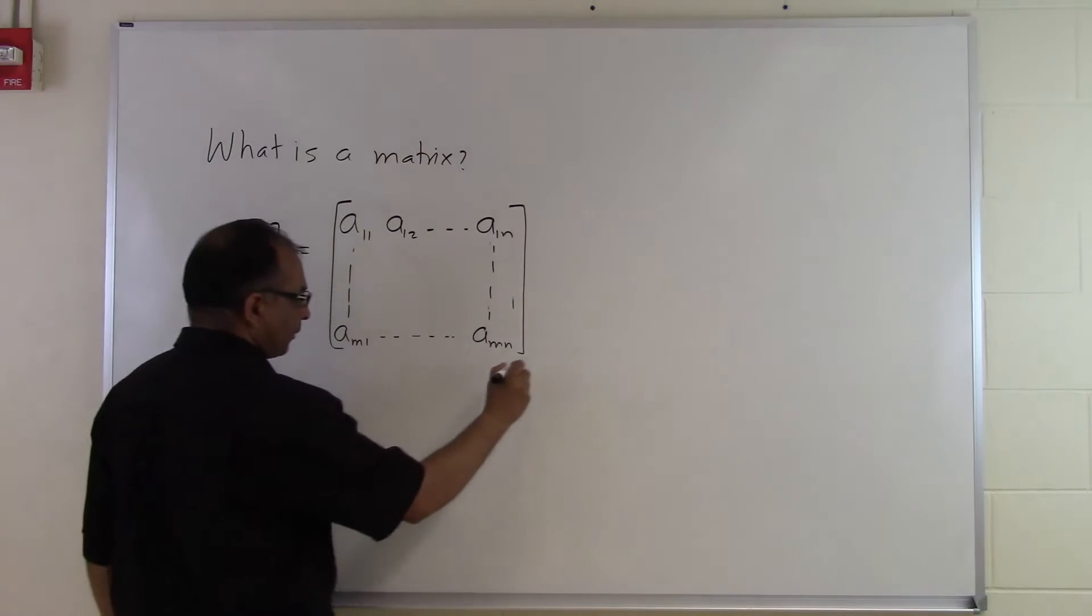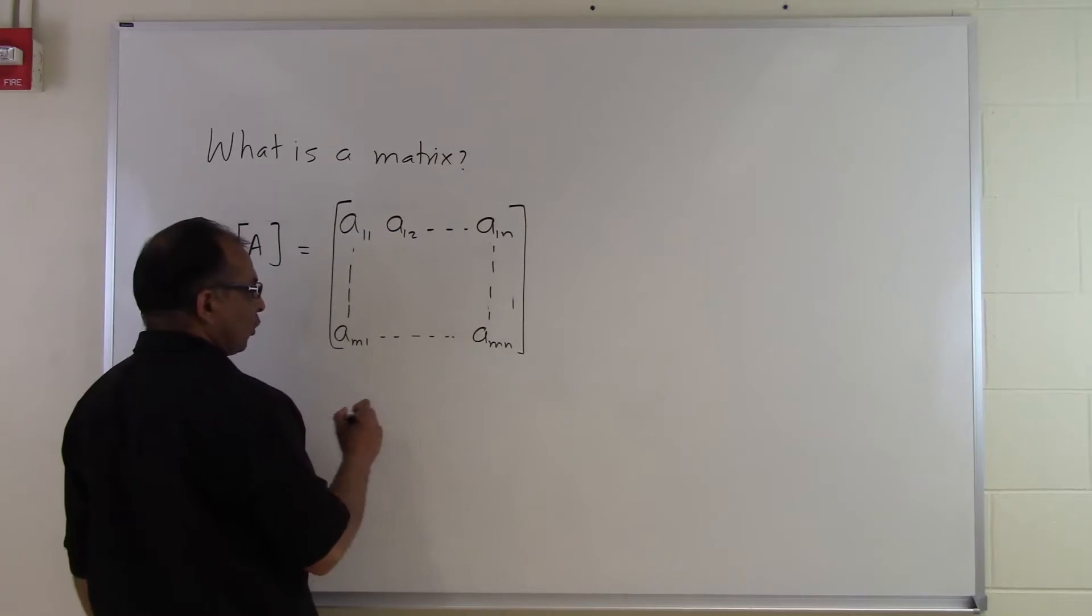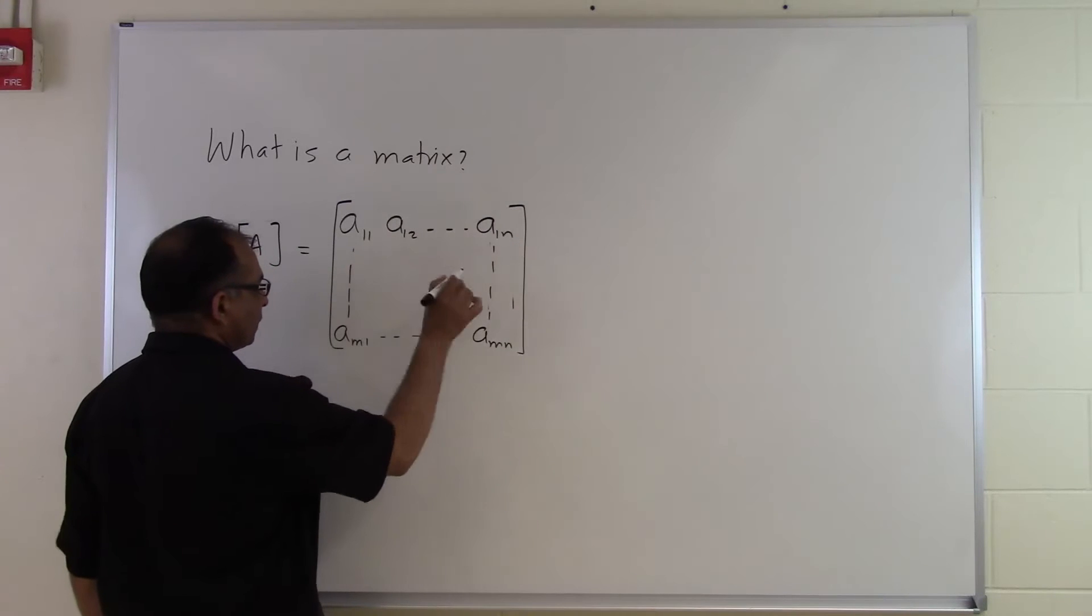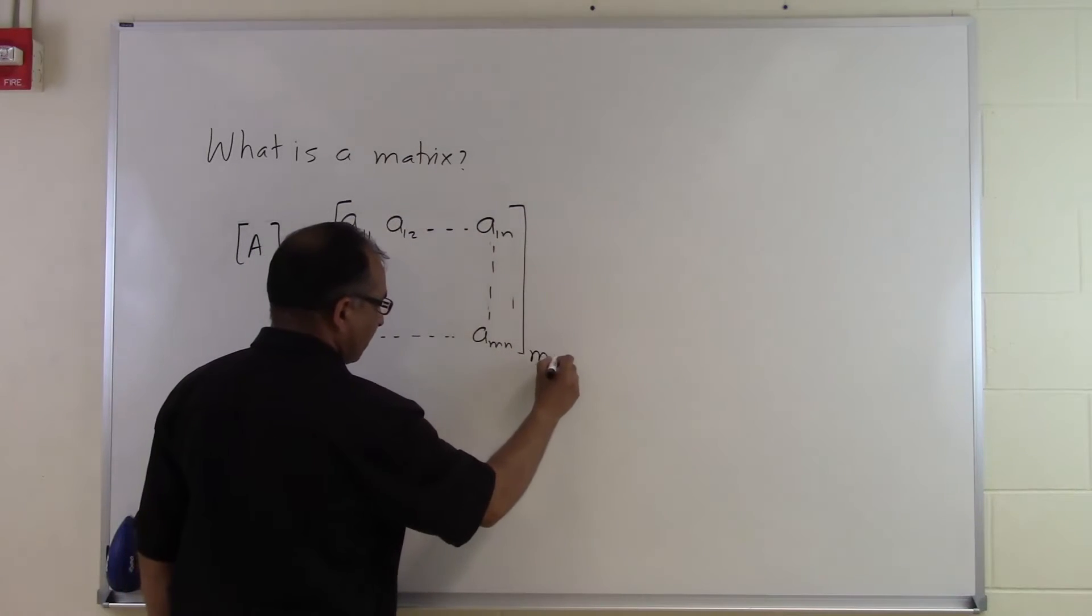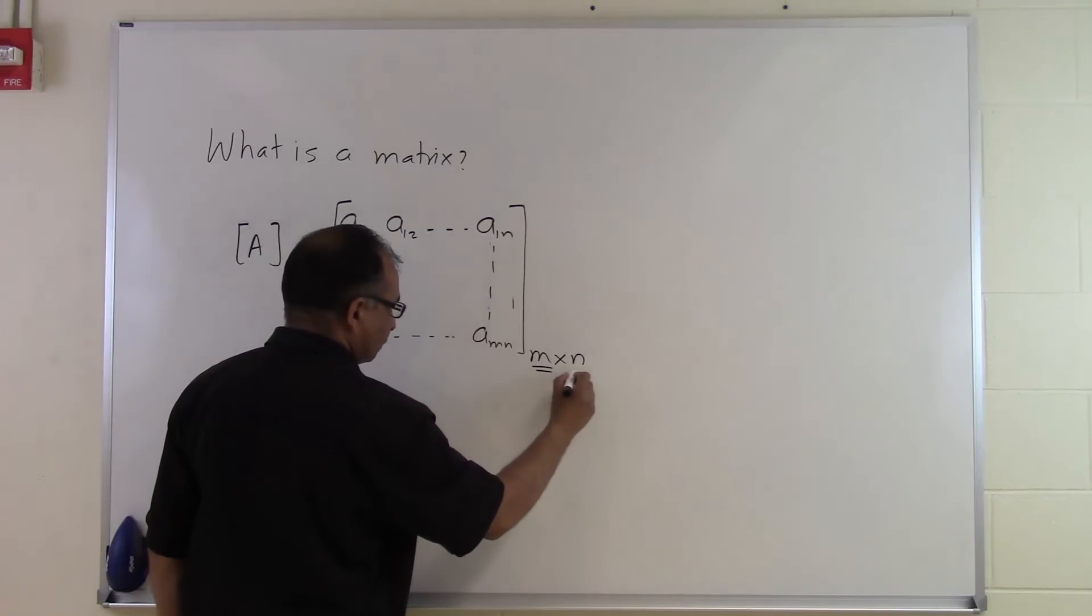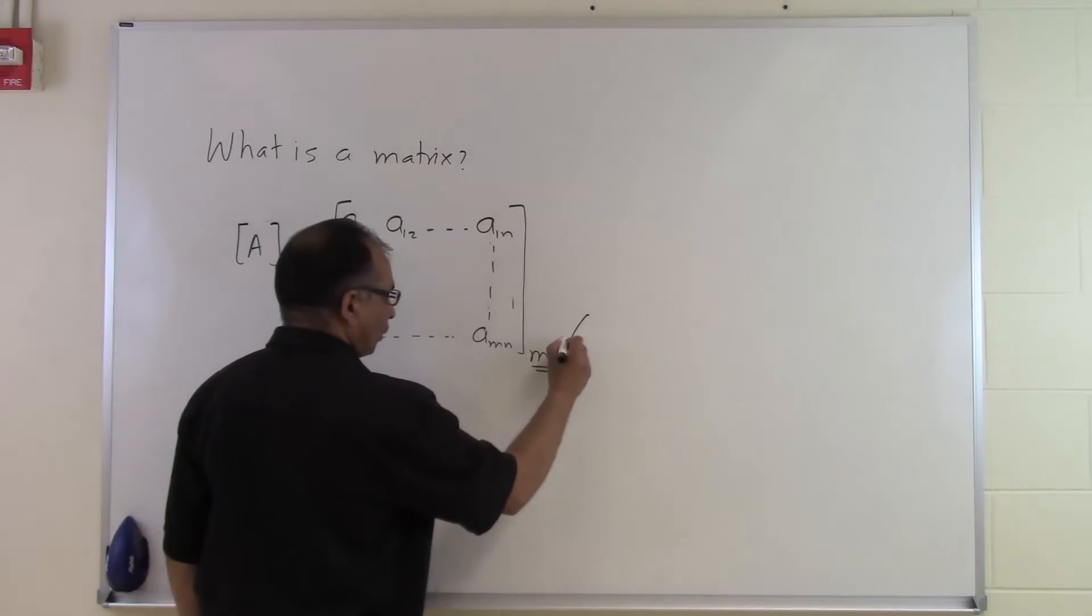What this means is that we have the order of the matrix. The order of the matrix is how many rows it has and how many columns it has. So that's M by N. M rows and N columns, that's called the order of the matrix.